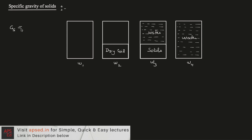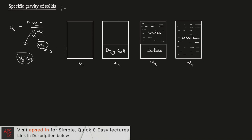If we talk about the specific gravity of solids, it is the weight of solids to the weight of an equivalent volume of water. In the numerator we have the weight of solids and in the denominator we have the weight of an equivalent volume of water. If Vs is the volume occupied by solids of weight Ws, then we multiply Vs with the unit weight of water to find the weight of an equivalent volume of water.